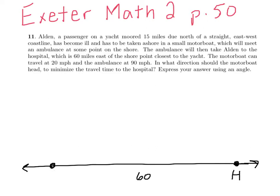That means the yacht now is going to be, we'll call this, and I know it's not to scale. That's Alden, he's right there on the yacht, which is 15 miles due north. So that's 15 miles.